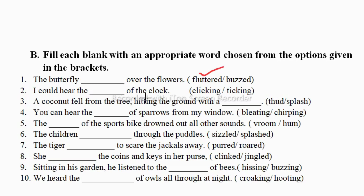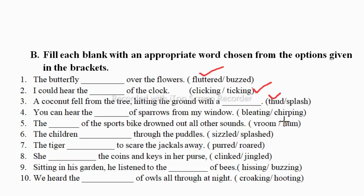I could hear the dash of the clock — clicking or ticking? The clock makes a sound like tick tick, so it's ticking. A coconut fell from the tree, hitting the ground with a dash — thud or splash? Splash is the sound made by water, so this is the sound thud. You can hear the dash of sparrows from my window — bleating or chirping? Bleating is the sound made by sheep, and chirping is the sound made by sparrows, the birds.